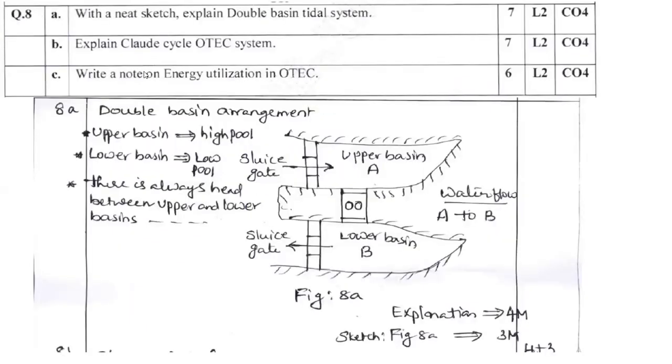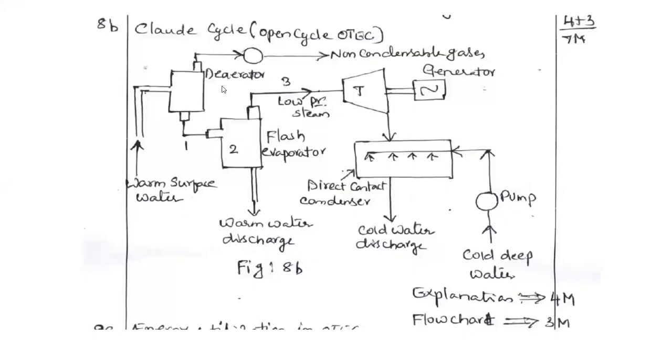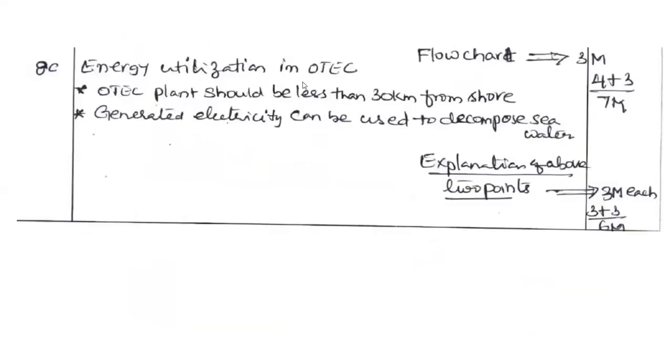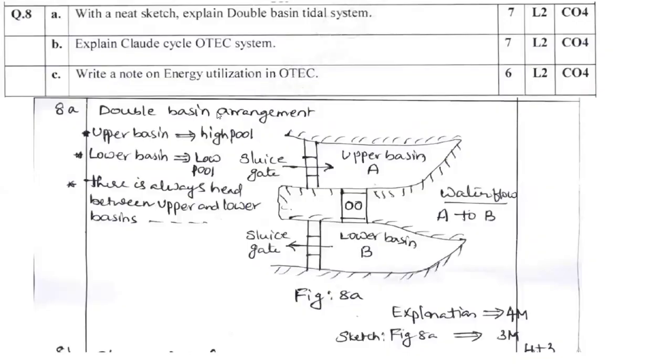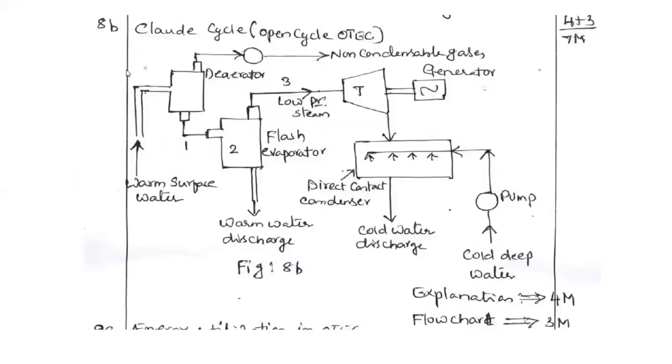Next is write a note on energy utilization in ocean thermal energy conversion. Energy utilization in OTEC. Flow chart is preferred. Then OTEC plant should be less than 30 kilometers away from the shore. Then generally electricity can be used in decomposed seawater. These are the few important points. Likewise, whatever you are getting you can update. Question number 8C is cleared.